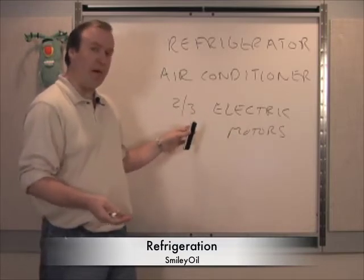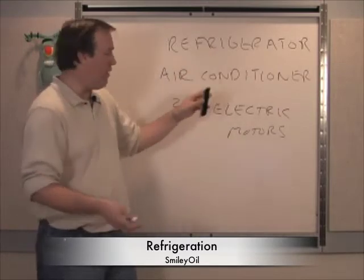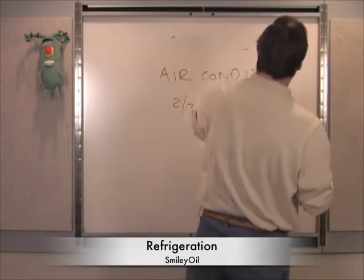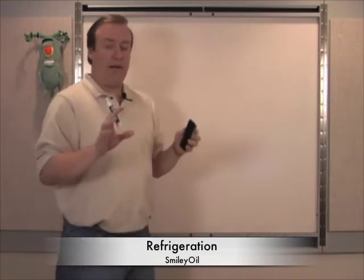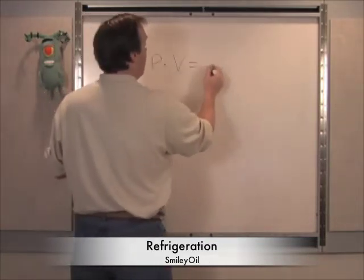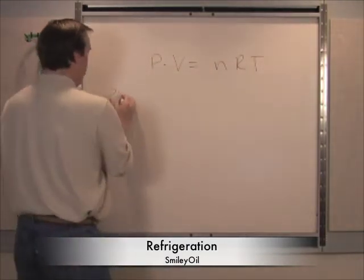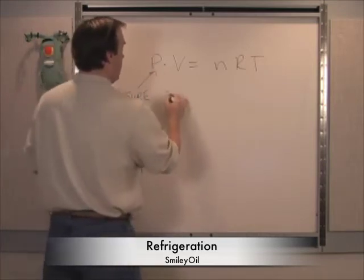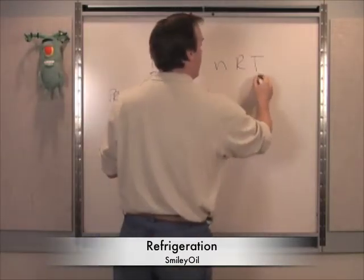Two-thirds of all the power used in the world goes into electric motors, and we use electric motors right here in our house. Now the thing we've got to use is the ideal gas law: PV = nRT — pressure, volume, constant, and temperature.